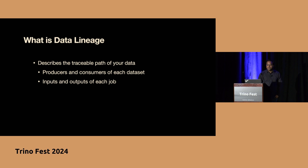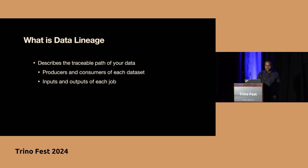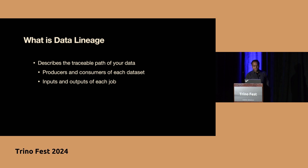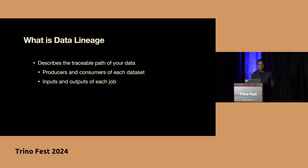So what is data lineage? Data lineage is a process which tracks the data as it moves from your source to a destination. It captures things like how your data came, how it is getting transformed, and where it is eventually going. You can think of it as a map that documents the entire life cycle of the data as it moves from one place to another, going through multiple data transformations via different engines.